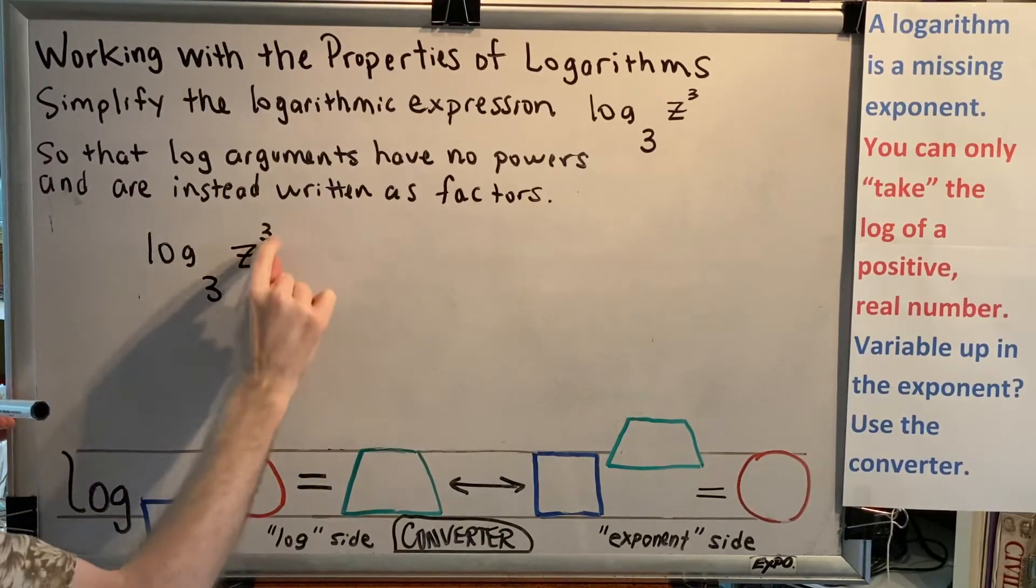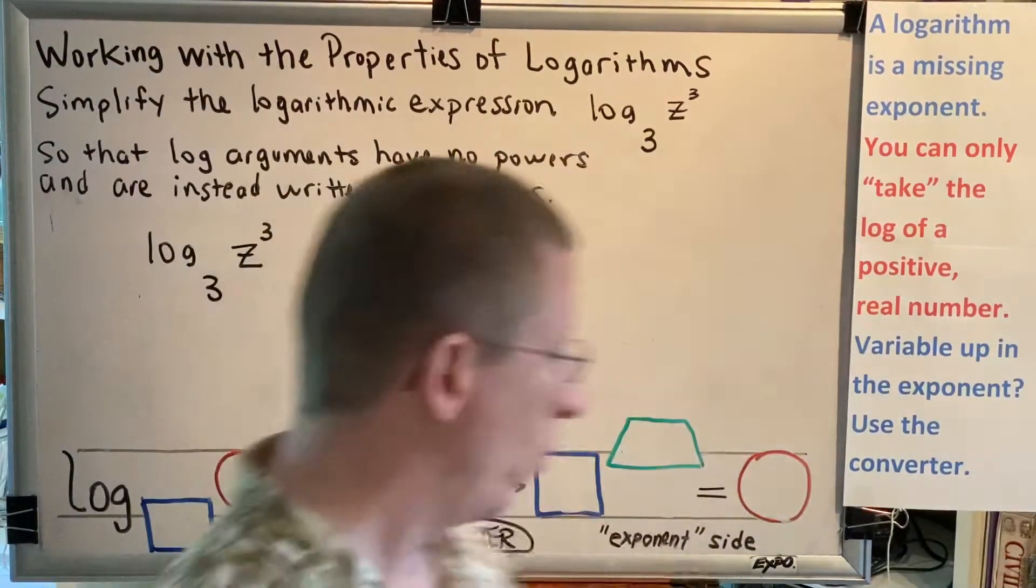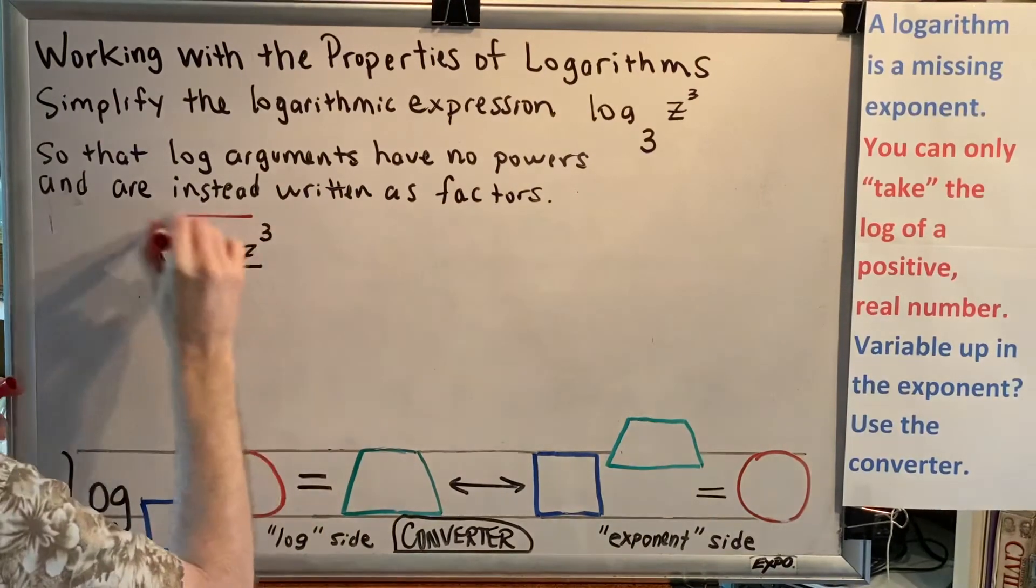Well, here's our argument, z cubed, and the power is 3. We need to find a way to rewrite it so that it no longer has that power.